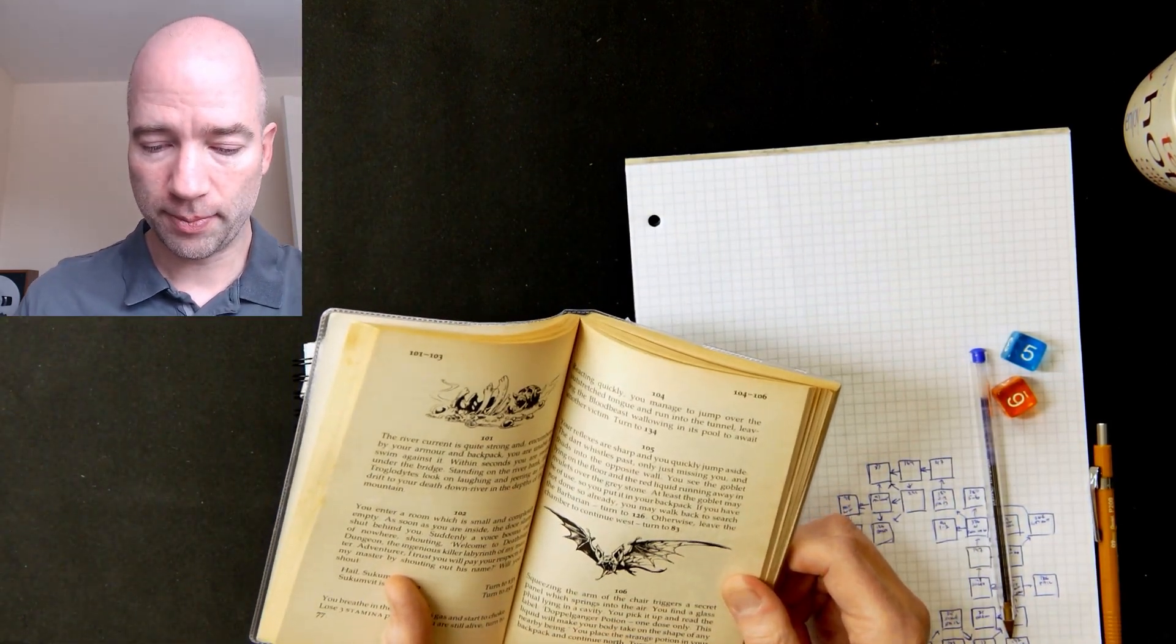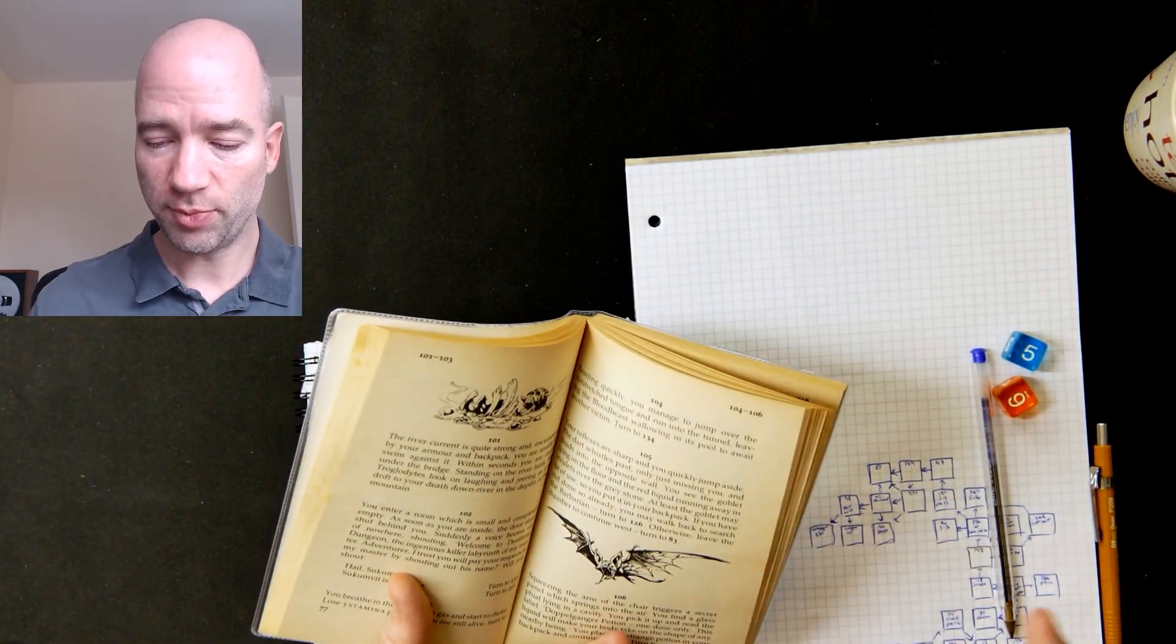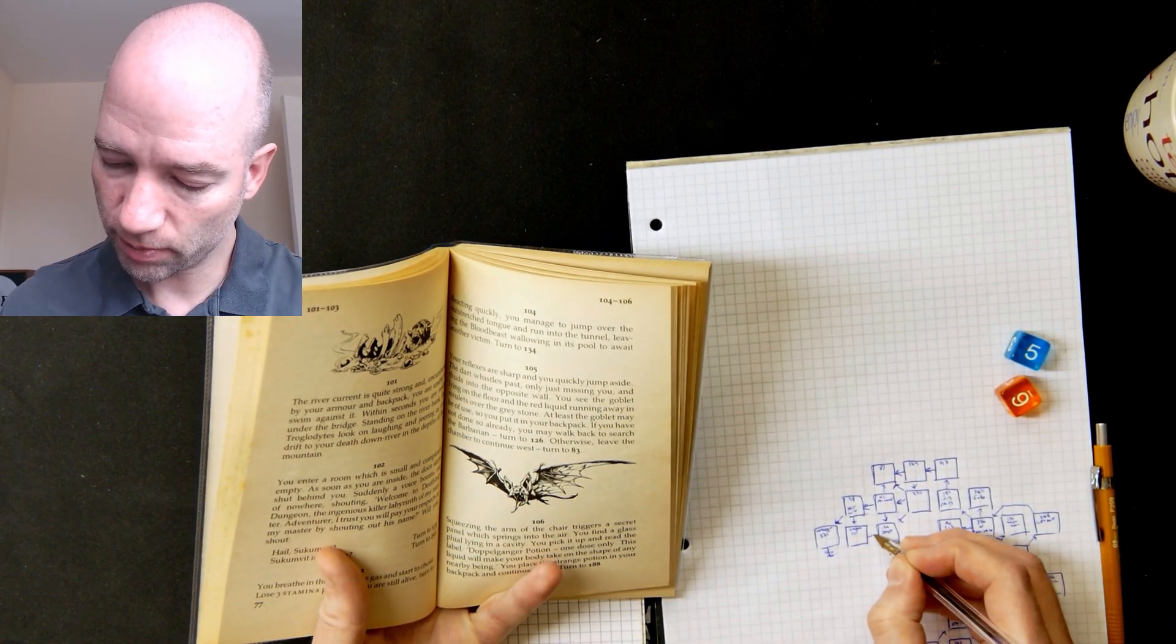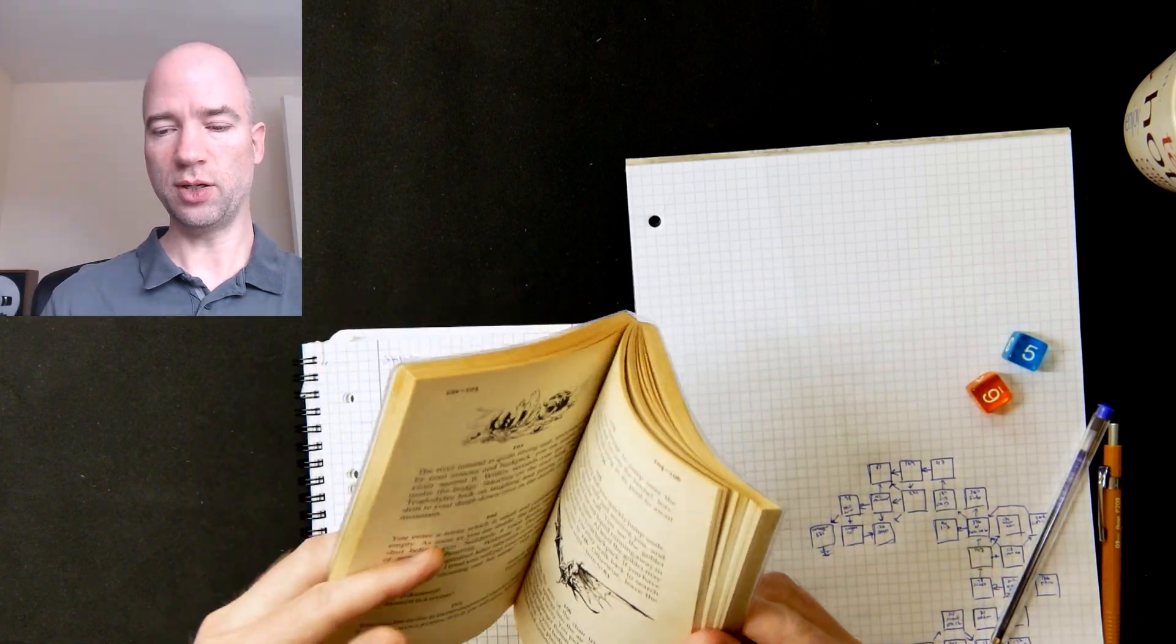Your reflexes are sharp and you quickly jump aside. The dart whistles past, only just missing you, and thuds into the opposite wall. You see the goblet lying on the floor and the red liquid running away in rivulets over the grey stone. At least the goblet may be of use, so you put it in your backpack. So I've now got a goblet. If you have not done so already, you may walk back to search the barbarian. So I'll go back to search the barbarian, 126.